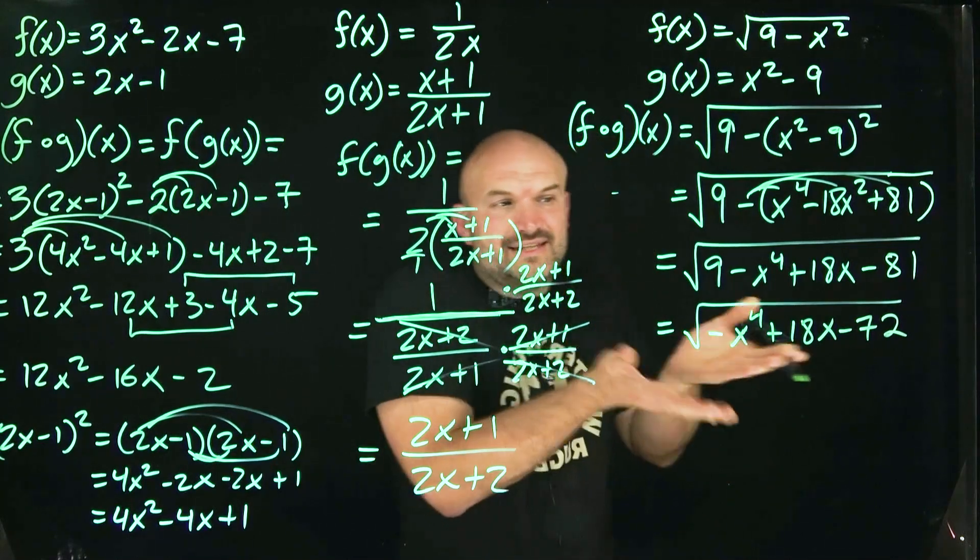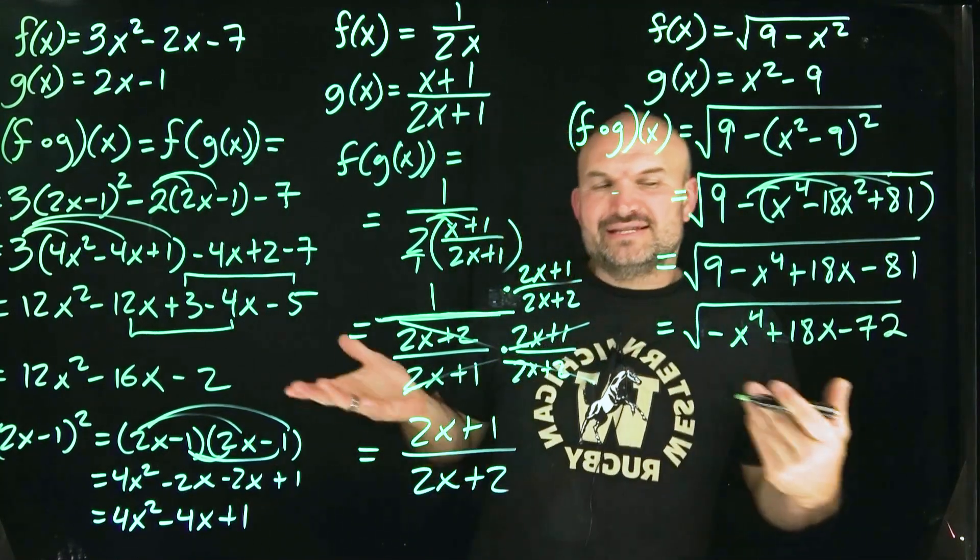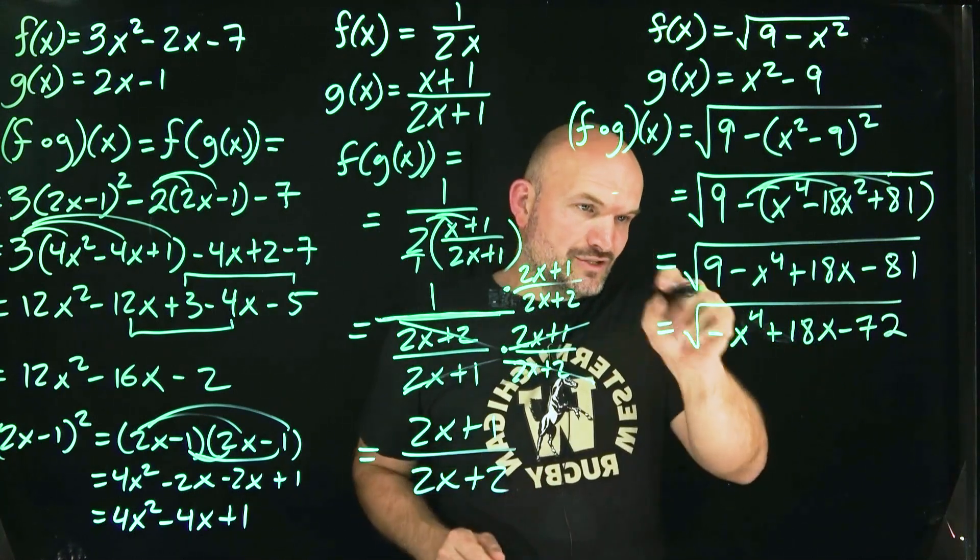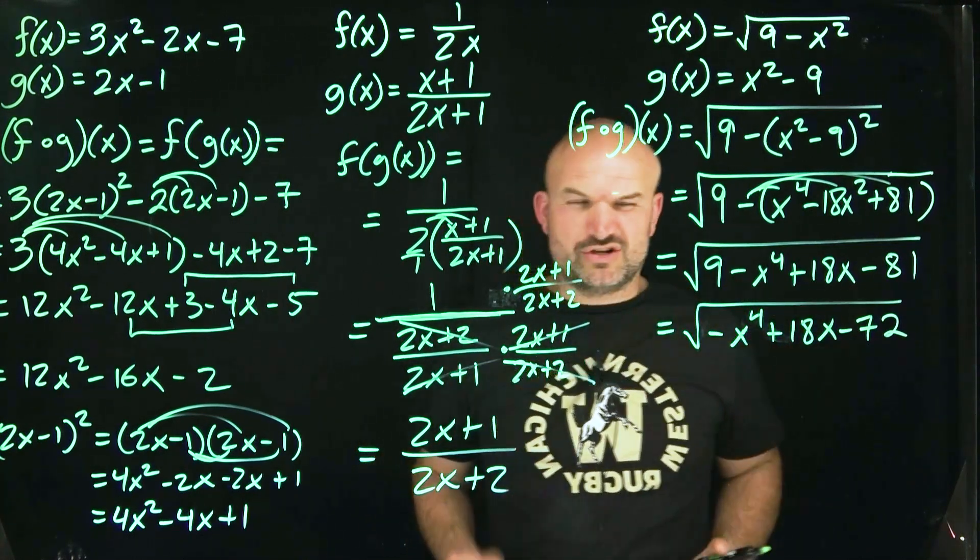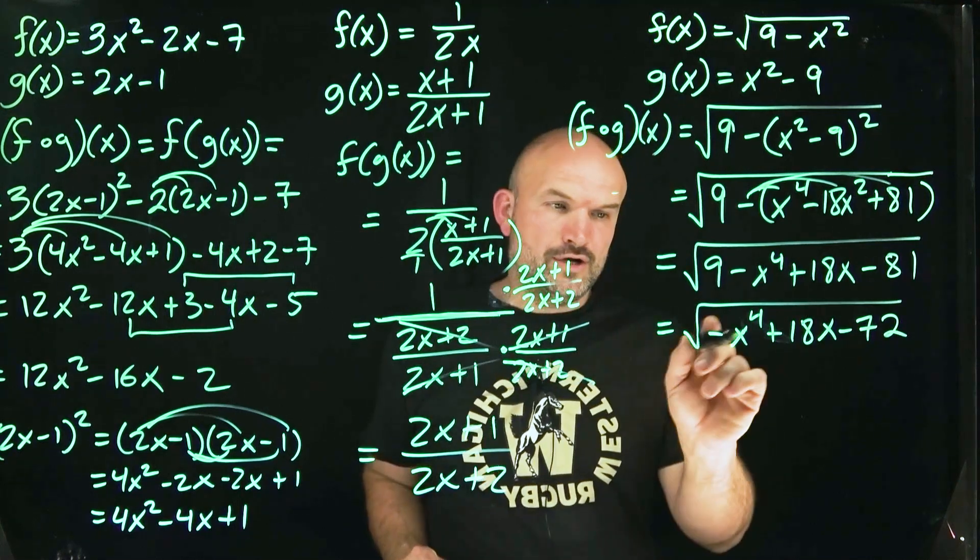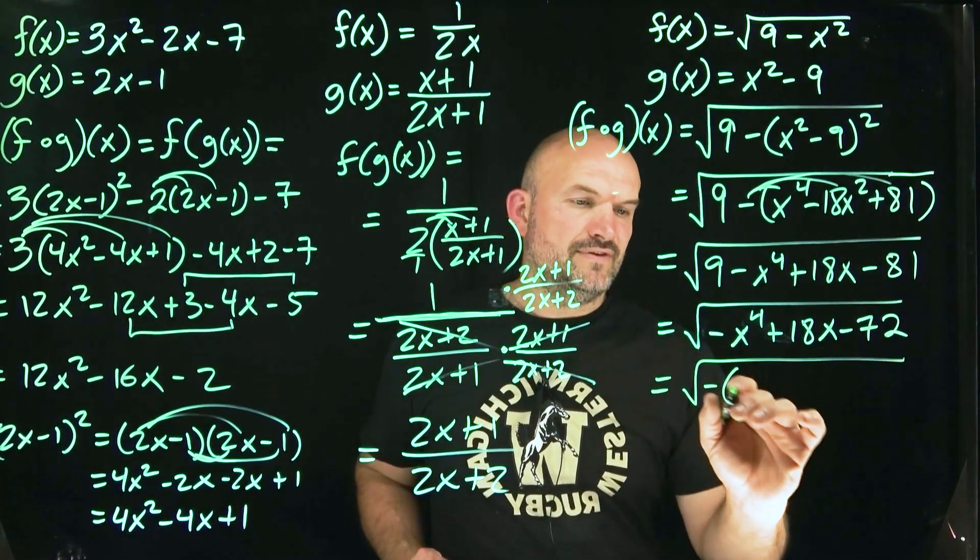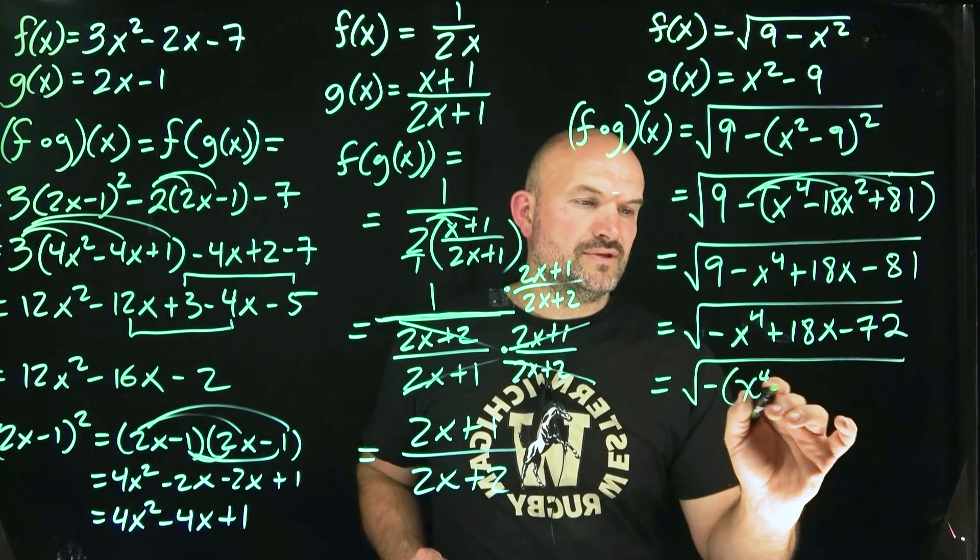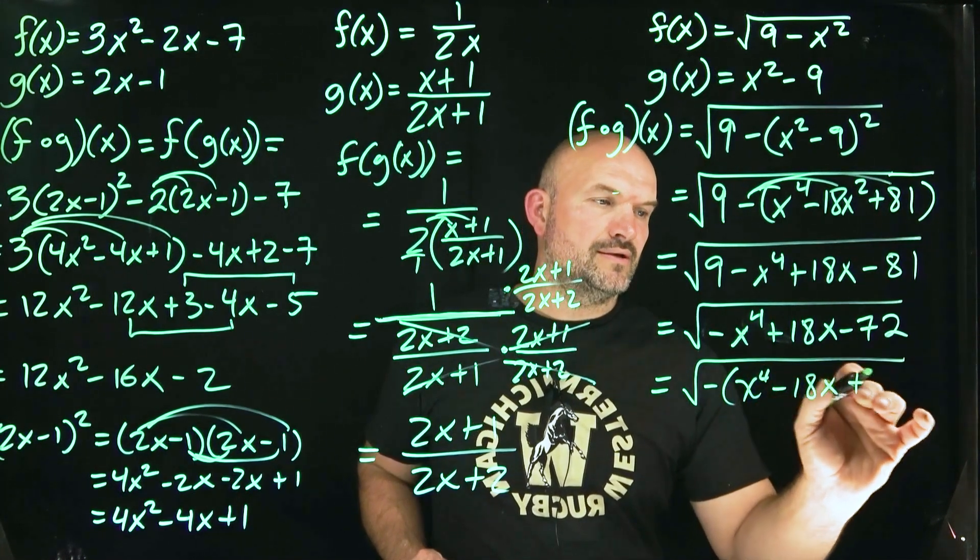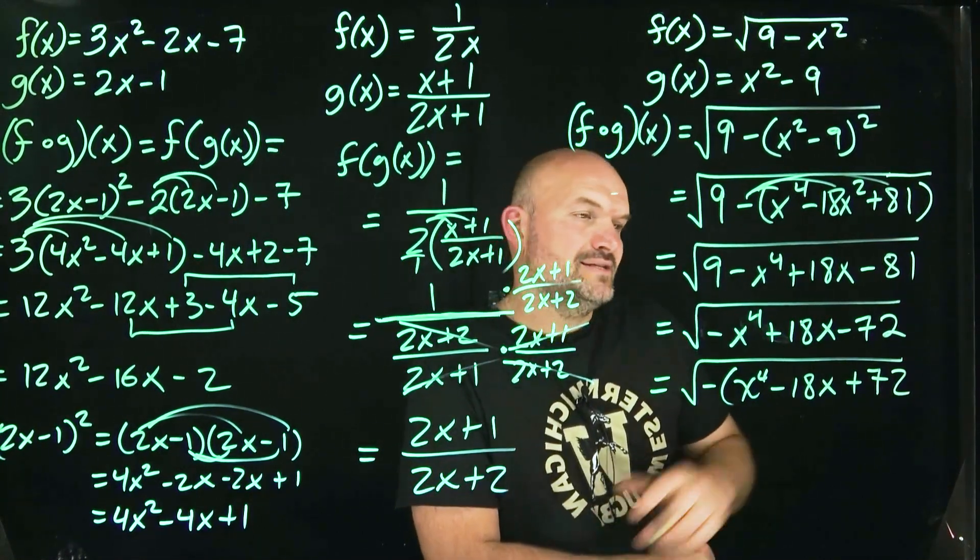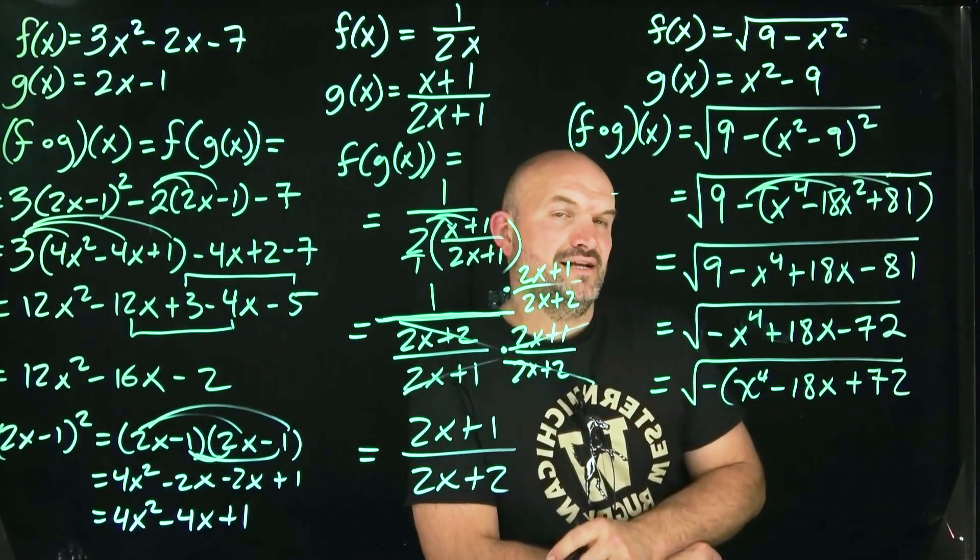Let's see here. So this is a negative x to the fourth minus x to the fourth. Let's see, plus an 18x and then this would be a minus a 72. And now what I want to see is like technically that's correct, right? But let's see if we can simplify this any further. Can I maybe go ahead and factor this down? I can't distribute the square root across each one of those terms, but I could, could I factor that out? Well, I know I could factor out a negative, right? So let's do that first.